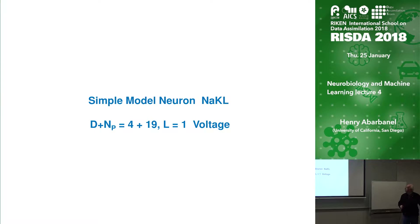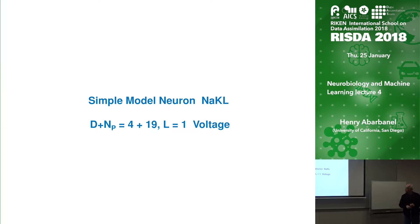This is a simple neuron model — the model with sodium channels, potassium channels, and a fancy fudge factor that Hodgkin threw in called leak channels, meaning there's a little bit more in there that we don't really know much about. It's a problem with four dimensions and 19 parameters, and we get one measurement.